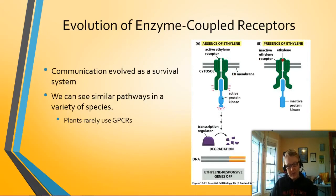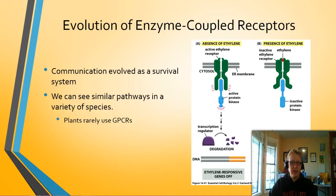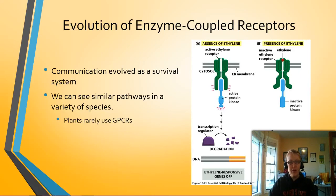We've talked a lot about these different receptors, and it's important to understand that communication evolved as a survival mechanism. Even the most basic single-cell organism needs to sense what the environment is like to control and regulate its internal functions. We see similar pathways across different species but they're all a little different. Notably, enzyme coupled receptors are used mainly in plants whereas GPCRs are the main receptors in animal cells. So through the tree of life there is a divergence in how these receptors are used, and it varies by organism.